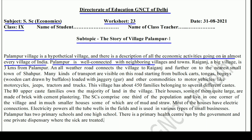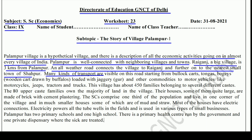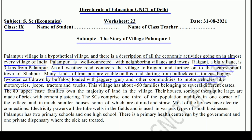Palampur is well connected with neighboring villages and towns. Palampur se 3 km doori hai Raiganj. An all-weather road connects the village to Rai Ganj and further on to the nearest small town of Shahapur. Yaani yahan pakki sadak bhi hai jo sabhi mausmoh mein is village ko Rai Ganj aur uske baad Shahapur se jodti hai. Many kinds of transport are visible on this road, starting from bullock carts, tongas, bogies, wooden carts drawn by buffalos, loaded with jaggery and other commodities, to motor vehicles like motorcycles, jeeps, tractors and trucks.